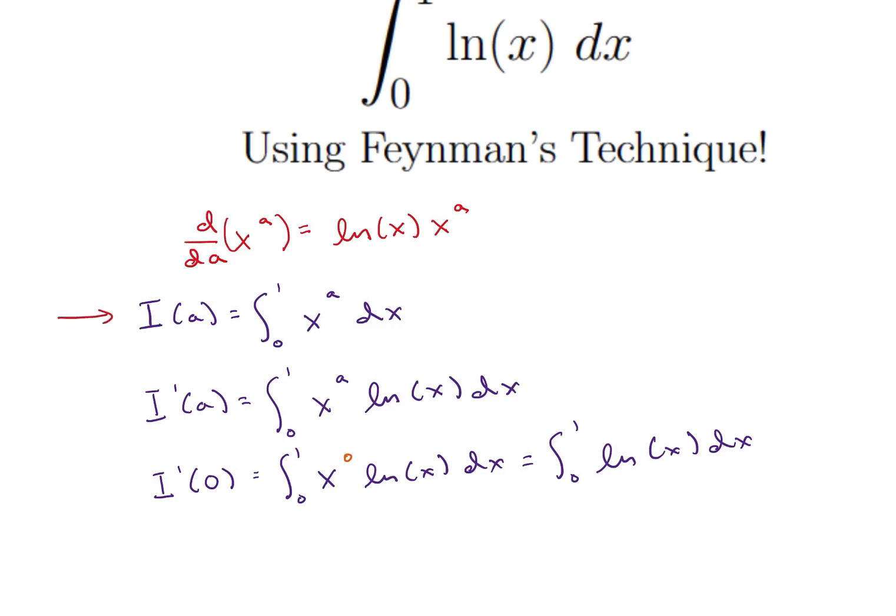So what I noticed is I can actually solve this integral up here. I can solve and get the integral of x to the a is going to be x to the a plus 1 divided by a plus 1. And I'm going to evaluate that from 0 to 1. I'm going to plug in 1 for x, so that's going to give me 1 over a plus 1. And then minus plugging in 0 for x just gives me 0. So I get 1 over a plus 1.